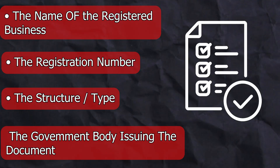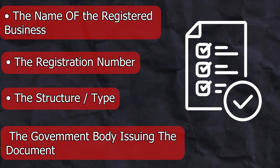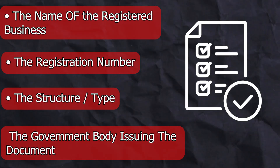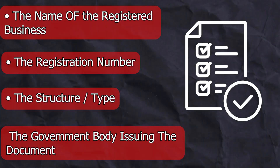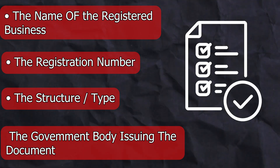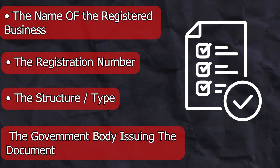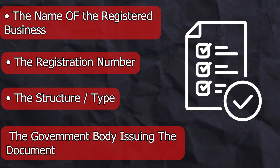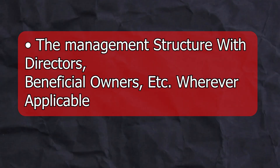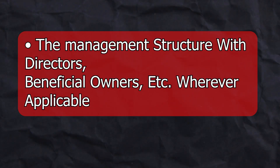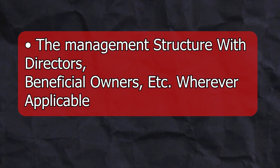For the verification documents, they must hold the name of the registered business, the address of the business, the registration number, the type of business, the government body issuing the document, and finally the management structure with directors, beneficial owners, etc.